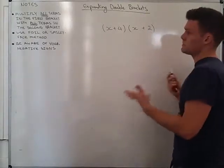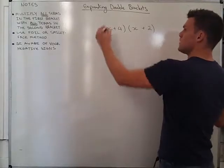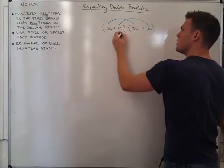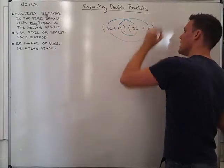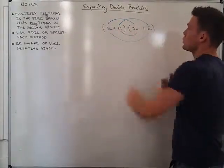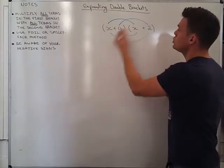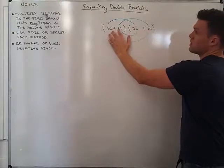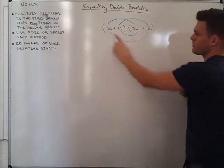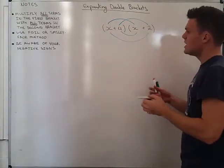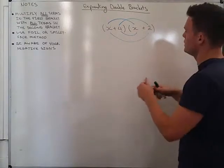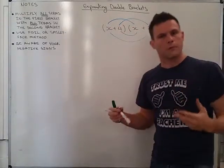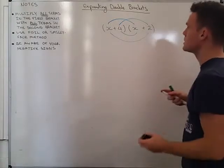I can follow a smiley face method, which basically means I go, make an eyebrow, make an eyebrow, make a mouth, and a chin. And I multiply along those lines, because this way I am ensuring that I am multiplying every term in the bracket, in the first bracket by every term in the second bracket, provided I am multiplying along the lines. And I like this method because it's quite visual, it gives you two little eyes, a mouth and a chin, and I prefer the visual way of remembering this.